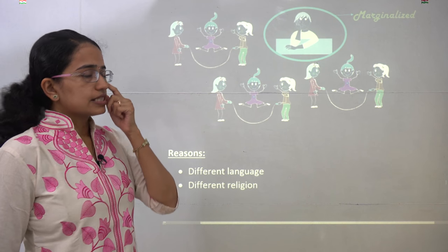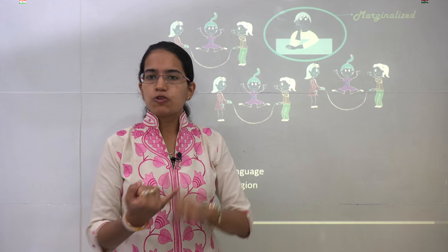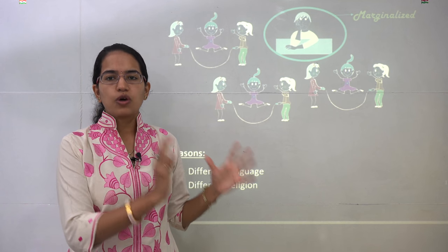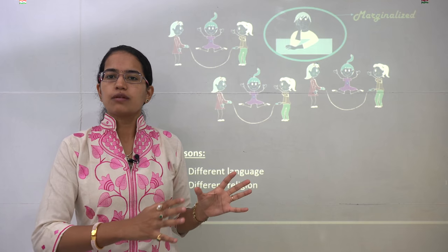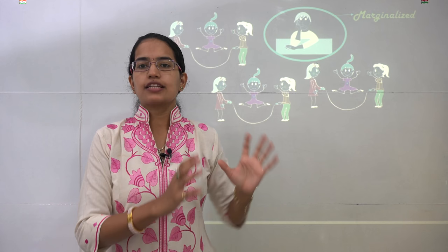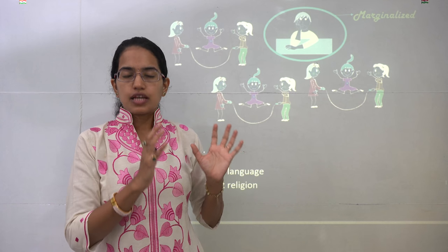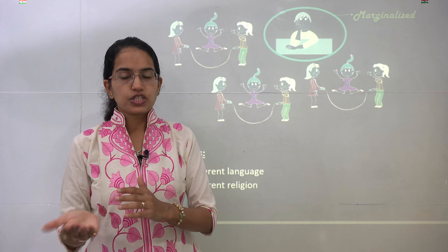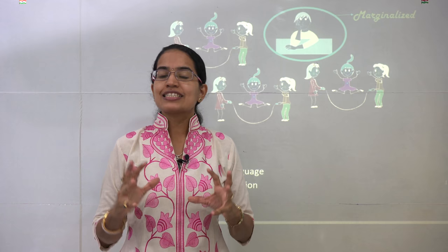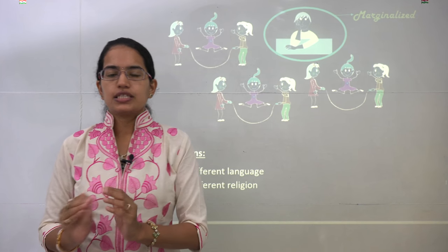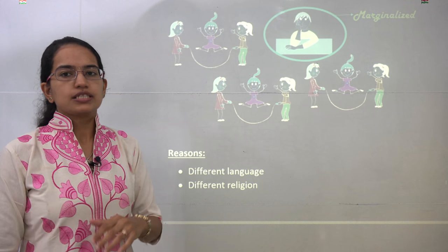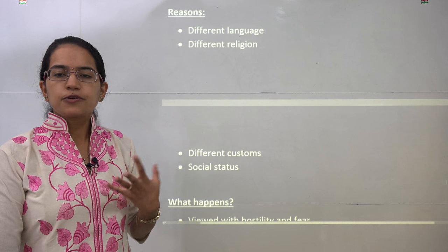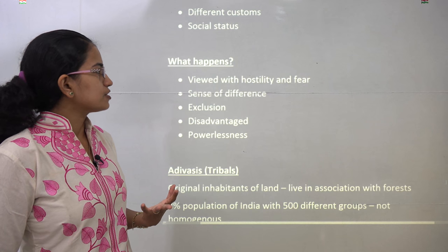Now, why marginalization occurs is important. It could be due to difference in language — a person from South India moving to North India who is not able to mix with the common language Hindi that most people speak there might become marginalized. Marginalization could also be due to religion, so minority religious groups can be marginalized. It can also be due to differences in customs and social status.